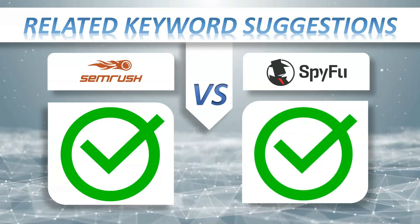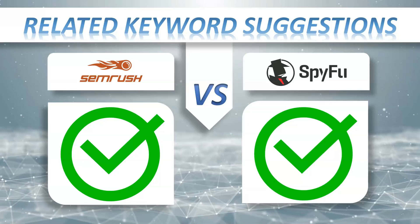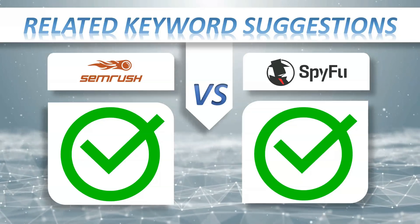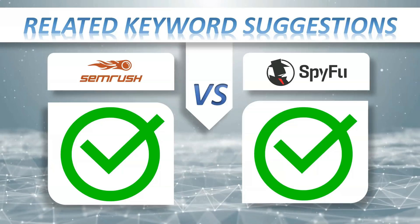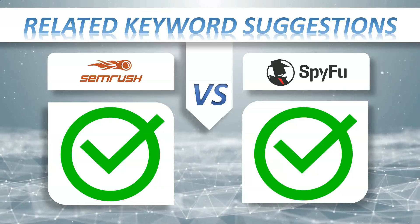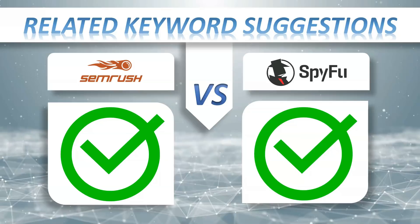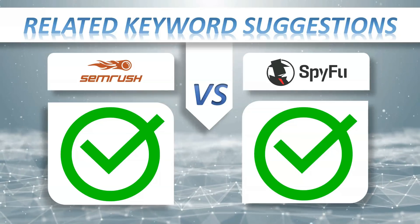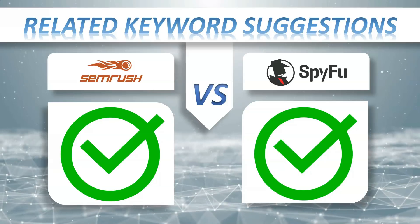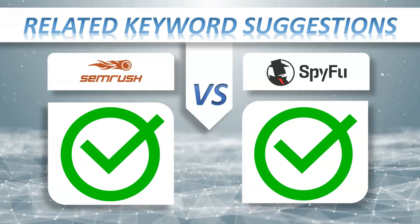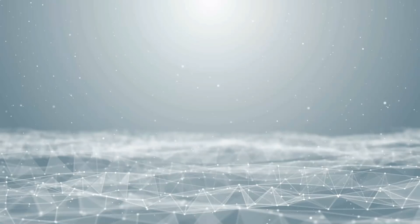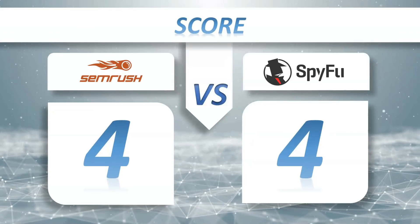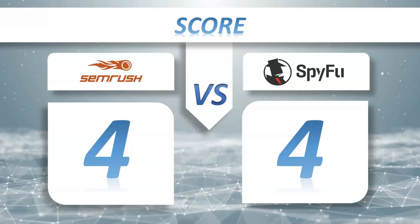Related keyword suggestions: the easiest way to reach clients is to find out what your potential customers or readers are searching for on Google and create content around those topics. You can analyze search trends, find search terms related to your business domain, and customize content to serve your customers' needs. Score so far: SEMrush four, SpyFu four.